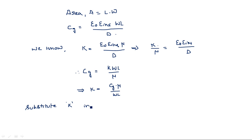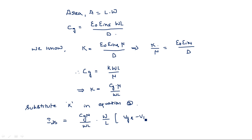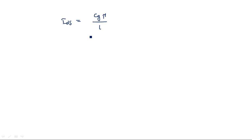Substituting k = CG·mu/(W·L) into equation 3: IDS = k·(W/L) · [VGS − VT − VDS/2] · VDS becomes IDS = (CG·mu)/(W·L) · (W/L) · [VGS − VT − VDS/2] · VDS. The W terms cancel, giving IDS = (CG · mu / L²) · [VGS − VDS/2 − VT] · VDS. This is equation 5, expressing IDS in terms of CG.